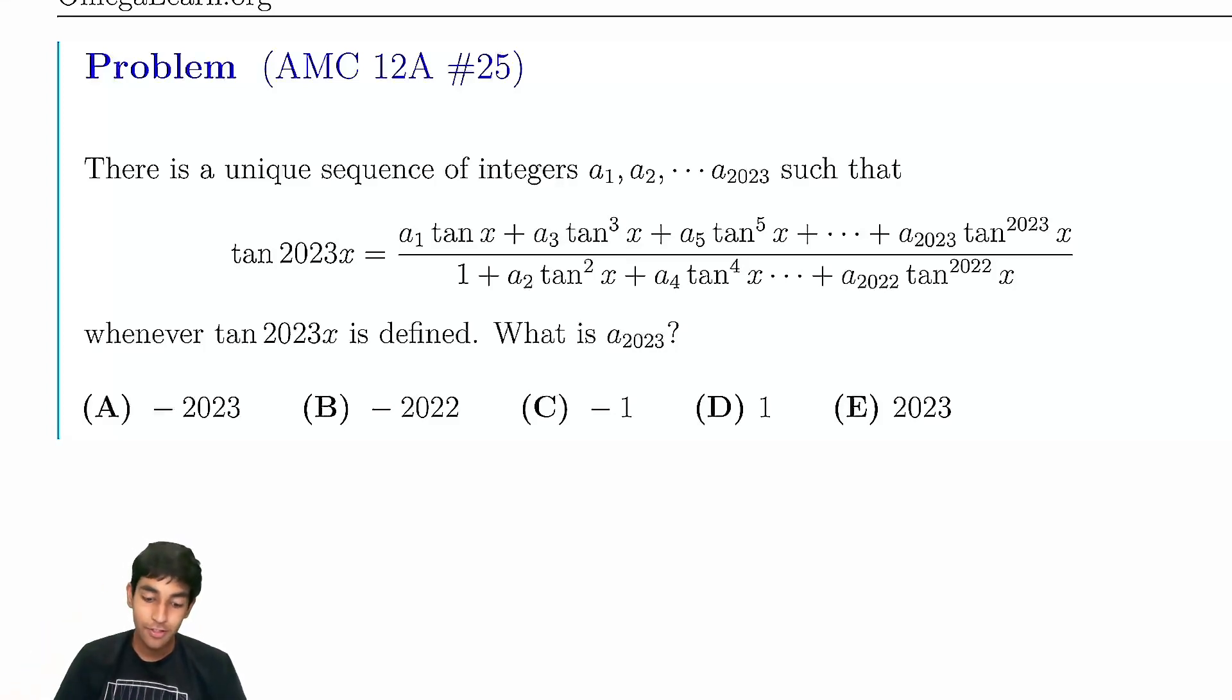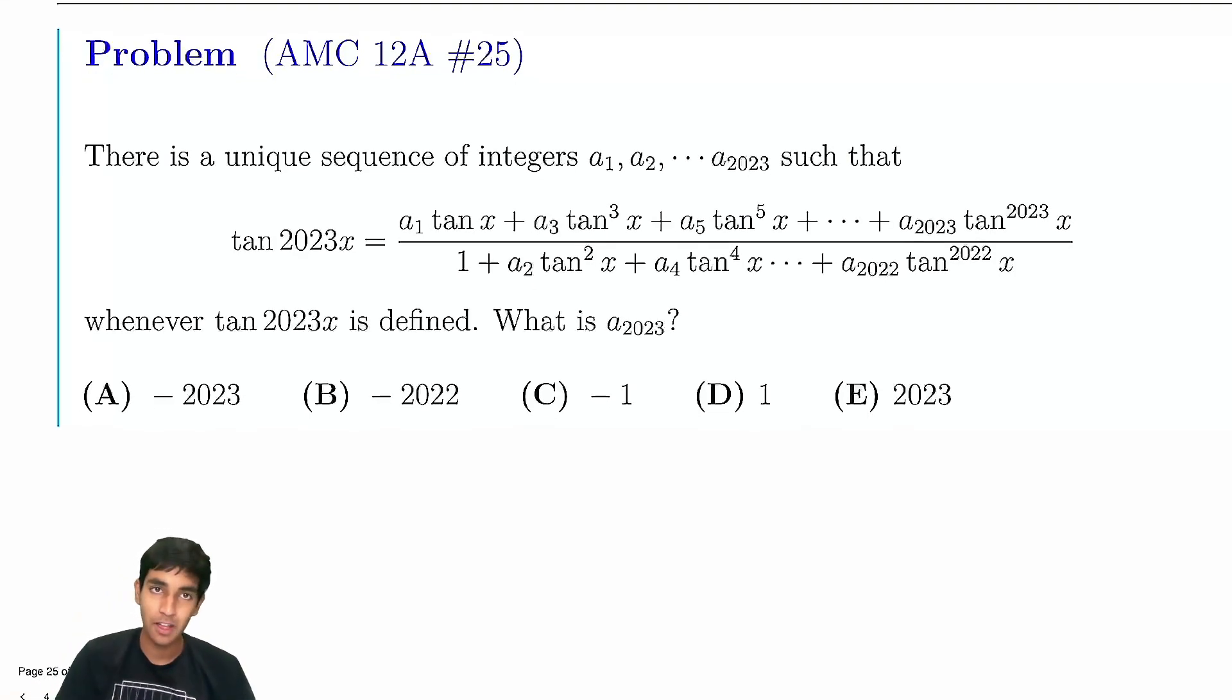Let's now tackle number 25 on the AMC-12A. A tricky problem with a really cool and simple solution. There are unique integers a1 through a2023 such that we can rewrite tan of 2023x in this form. We're asked to find the coefficient of tan^2023 of x.